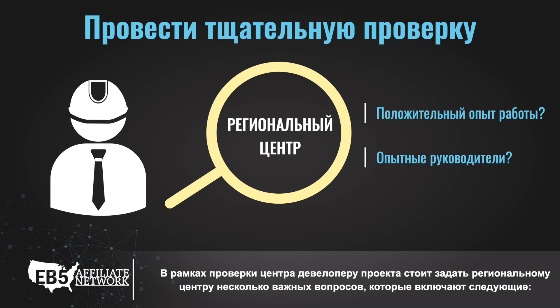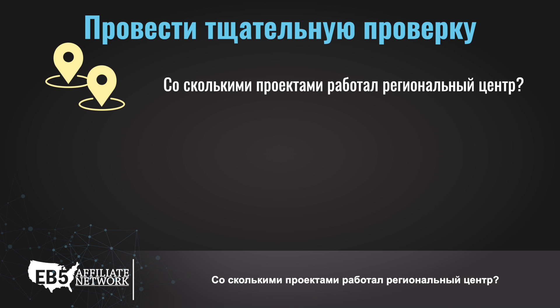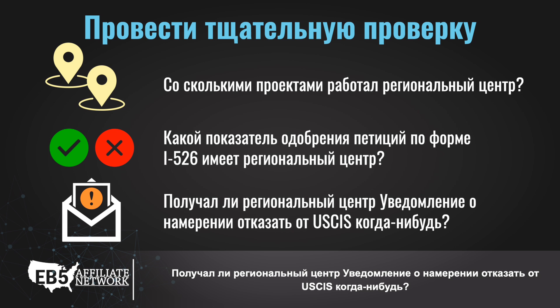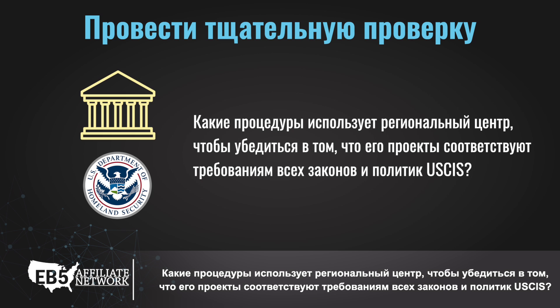During the diligence process, a project developer should ask the regional center several key questions, which include the following: How many projects has the regional center engaged? What is the regional center's rate of approval for I-526 petitions? Has the regional center ever received a notice of intent to deny from USCIS? What procedure does the regional center have in place to ensure that its projects comply with all laws and USCIS policies?